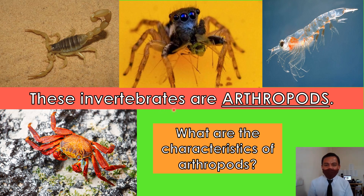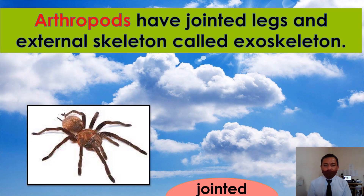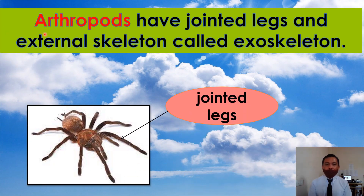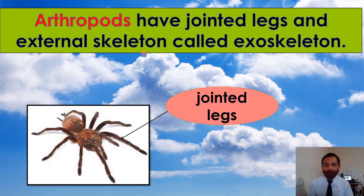These invertebrates are arthropods. What are the characteristics of arthropods? Arthropods have jointed legs and an external skeleton, called an exoskeleton. Look at the picture — these are the jointed legs.